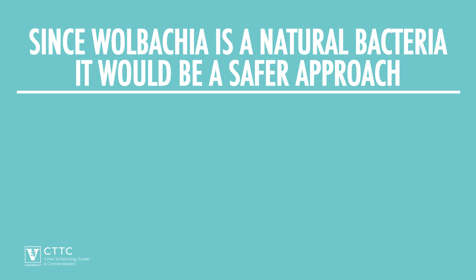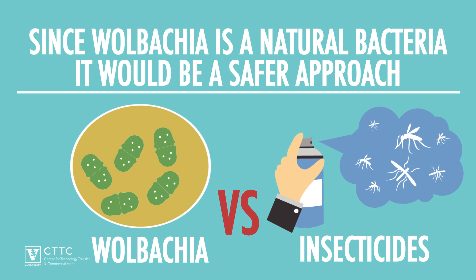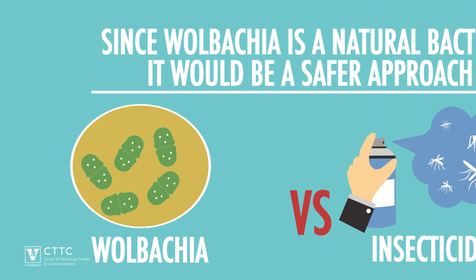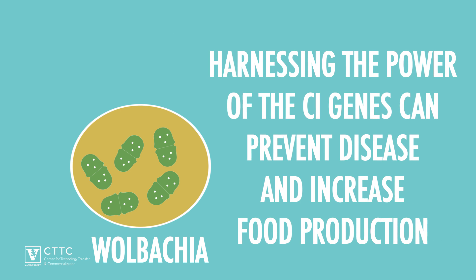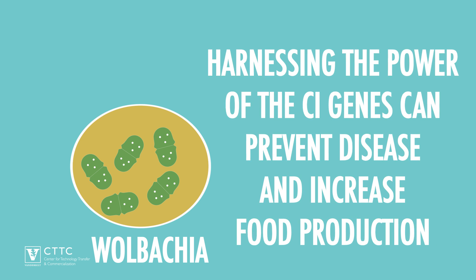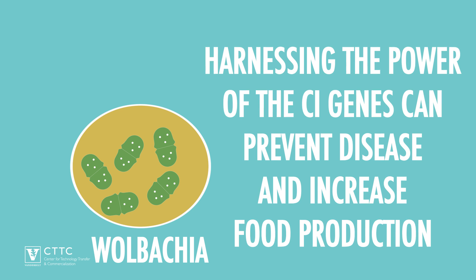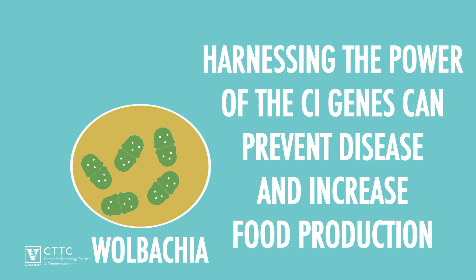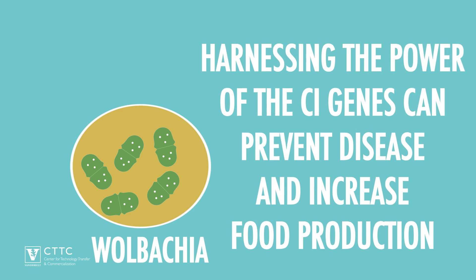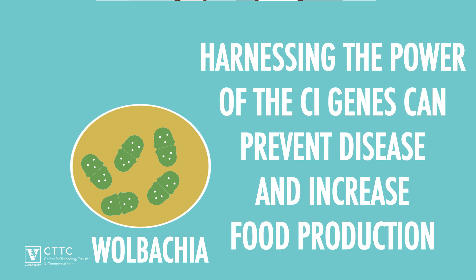Since Wolbachia is a natural bacteria that already infects almost half of the world's insect species, these approaches would be safer and have fewer environmental side effects than insecticides and traditional pest control strategies. Understanding Wolbachia better and harnessing the power of the CI genes can potentially prevent disease in tens of millions of people and dramatically increase food production.